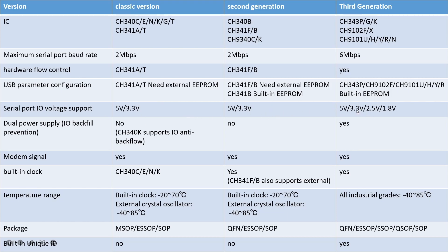Multiple voltage support is especially important if you want to implement USB-PD, where you need different voltage ranges depending on the current being supplied to the system. And lastly, the third generation contains a built-in unique ID, which is essential especially if you want to form clusters or have multiple chips working together.